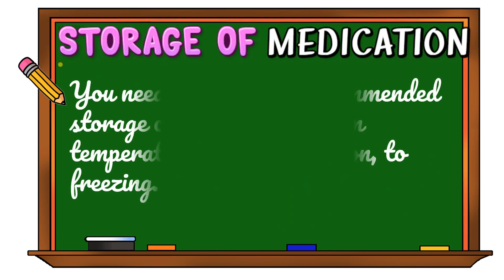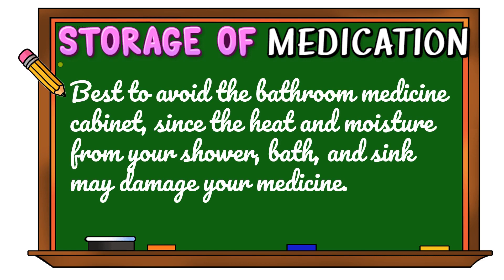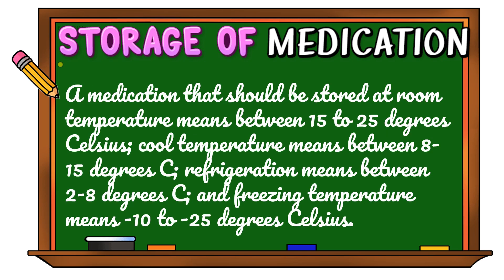For the storage of medication, you need to know the recommended storage condition — from room temperature to refrigeration to freezing. It is best to avoid the bathroom medicine cabinet, since the heat and moisture from your shower, bath, and sink may damage your medicine. A medication stored at room temperature means between 15 to 25 degrees Celsius. Cool temperature means between 8 to 15 degrees Celsius. Freezing temperature means negative 10 to negative 25 degrees Celsius.